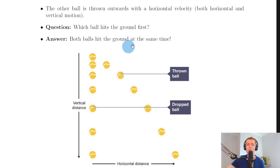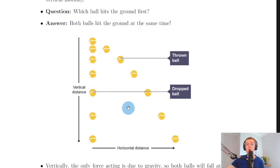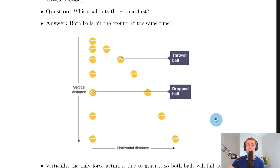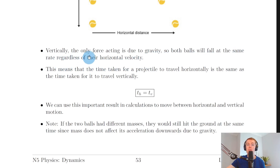The answer is that both balls will hit the ground at the same time. A common misconception is that the ball traveling straight downwards would reach the ground first and take less time, whereas the one projected horizontally would take longer. However, this is not true, so let's look at why.